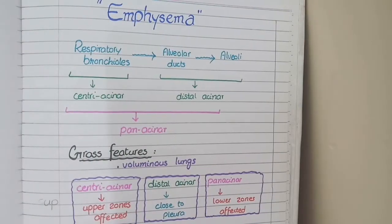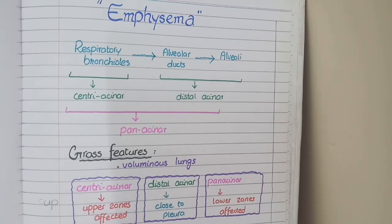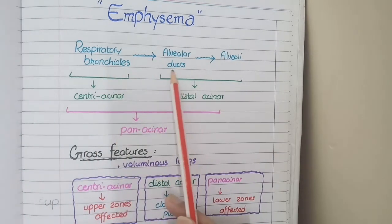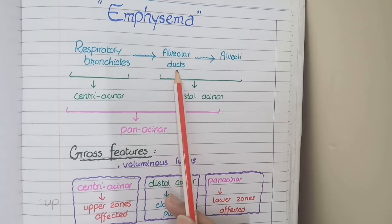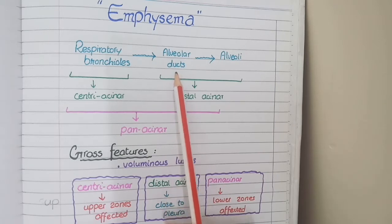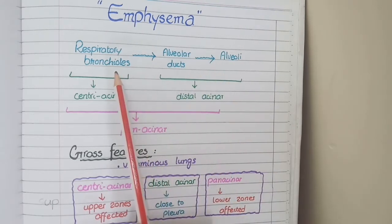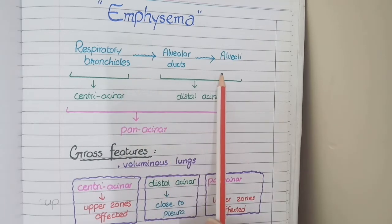We will start with emphysema. Emphysema is the destruction of walls of alveoli. Before we study the pathological features of emphysema in detail, we need to know what a lung acinus is. A lung acinus comprises of respiratory bronchioles that open into alveolar ducts, and at the end of these alveolar ducts there are alveoli. So a lung acinus includes respiratory bronchioles, alveolar ducts and alveoli.